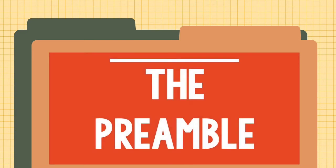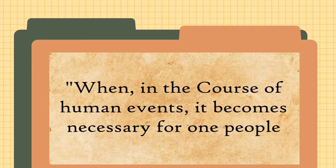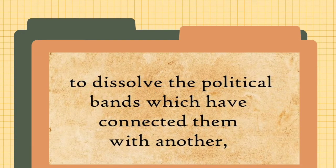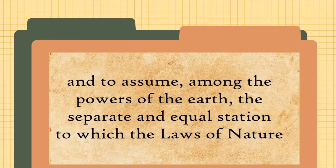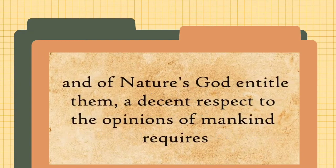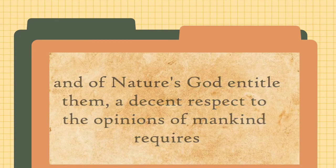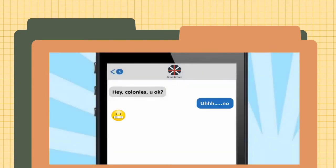The Preamble was the introduction to the document, and Jefferson didn't mince words. It says: 'When in the course of human events, it becomes necessary for one people to dissolve the political bands which have connected them with another, and to assume among the powers of the earth the separate and equal station to which the laws of nature and of nature's God entitle them, a decent respect to the opinions of mankind requires that they should declare the causes which impel them to the separation.' In the words of a modern breakup letter — Great Britain, we're breaking up with you, and you're about to find out why.